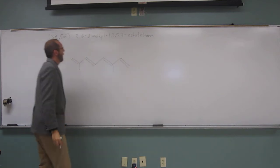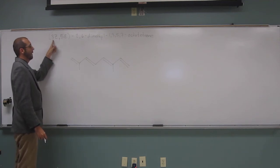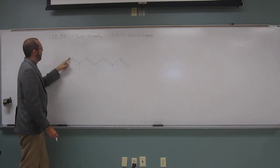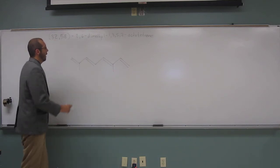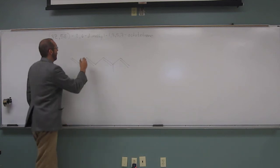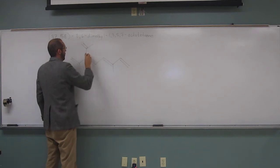And then it's saying the double bond at carbon three is Z, which is the same side. So one, two, three. So we have it on opposite sides now, so let's just change that. So we'll just draw that same group on the opposite side.